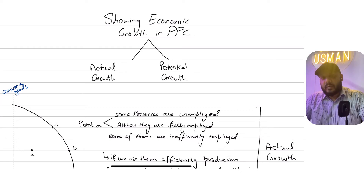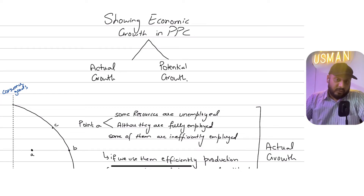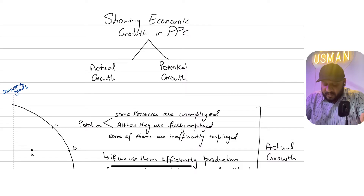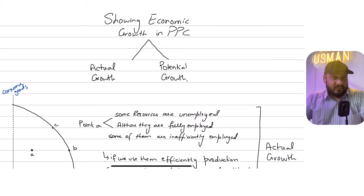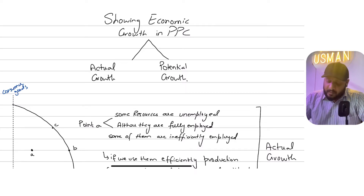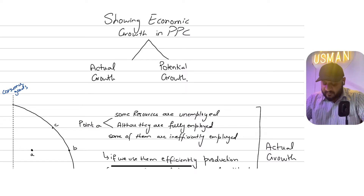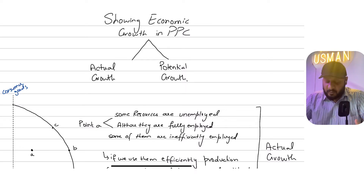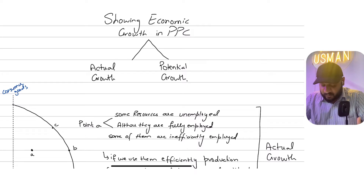Hi guys, welcome back. This video is basically about how to show economic growth through a production possibility curve. Economic growth means increasing national income, increasing real GDP. In order to show that on a production possibility curve diagram, we need to differentiate between two types of economic growth: actual growth and potential growth.